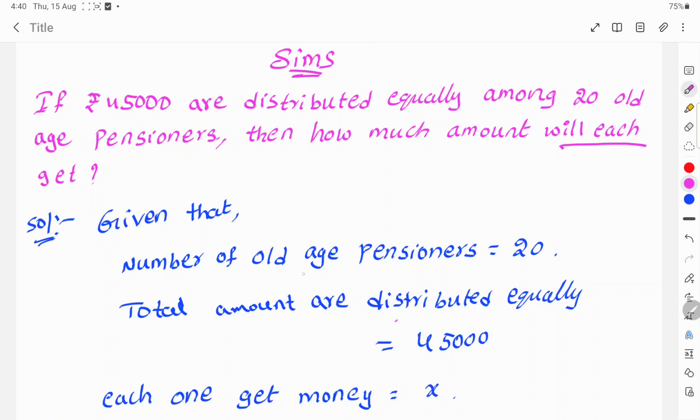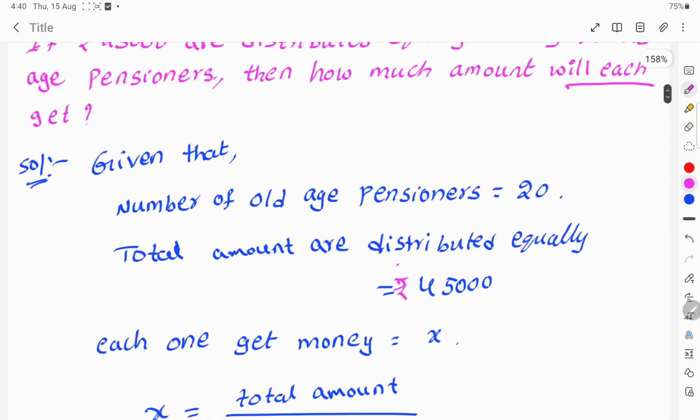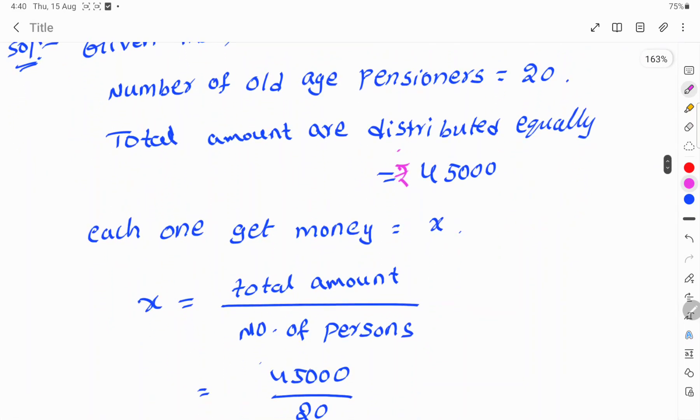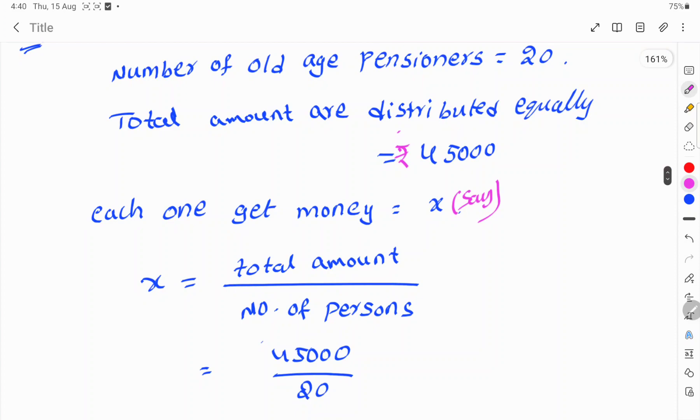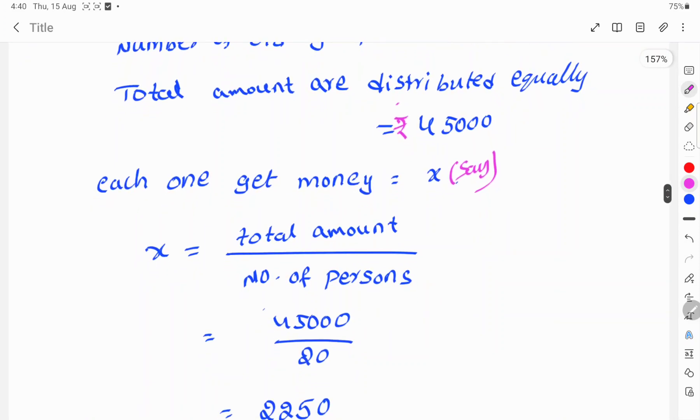Given that the number of old age pensioners is 20 members. Total amount distributed equally is 45,000 rupees. Each one gets money equal to x. So x equals total amount divided by number of persons.